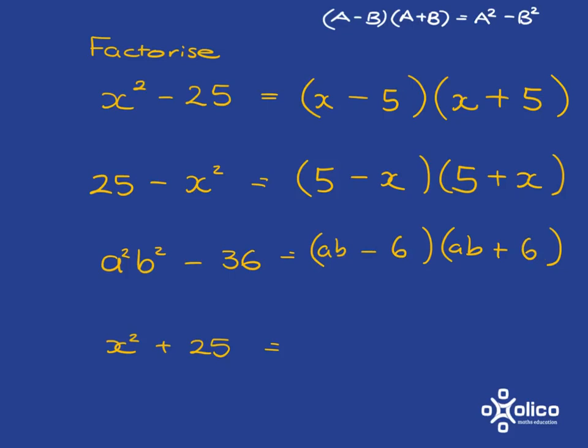What about this thing here where we've got x squared plus 25? The important point to notice here is that we do not have a difference of squares. We do have a square, x squared. We do have a square, which is 5 squared for 25. But we don't have a difference. We've got a plus. And it turns out that this can't be factorised.